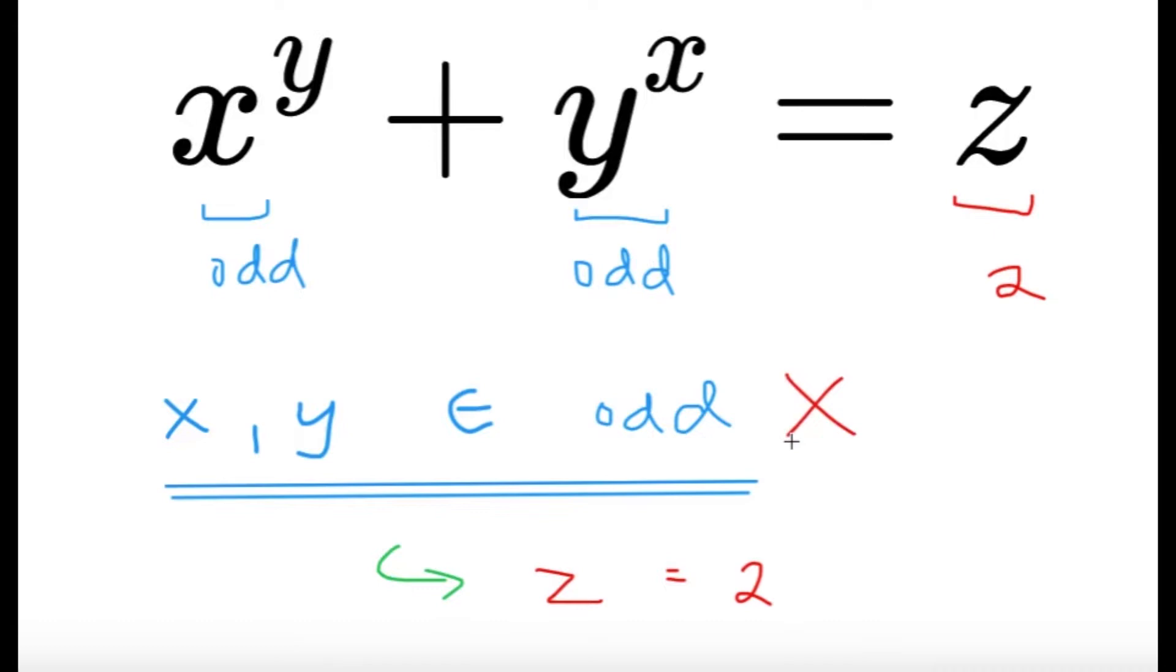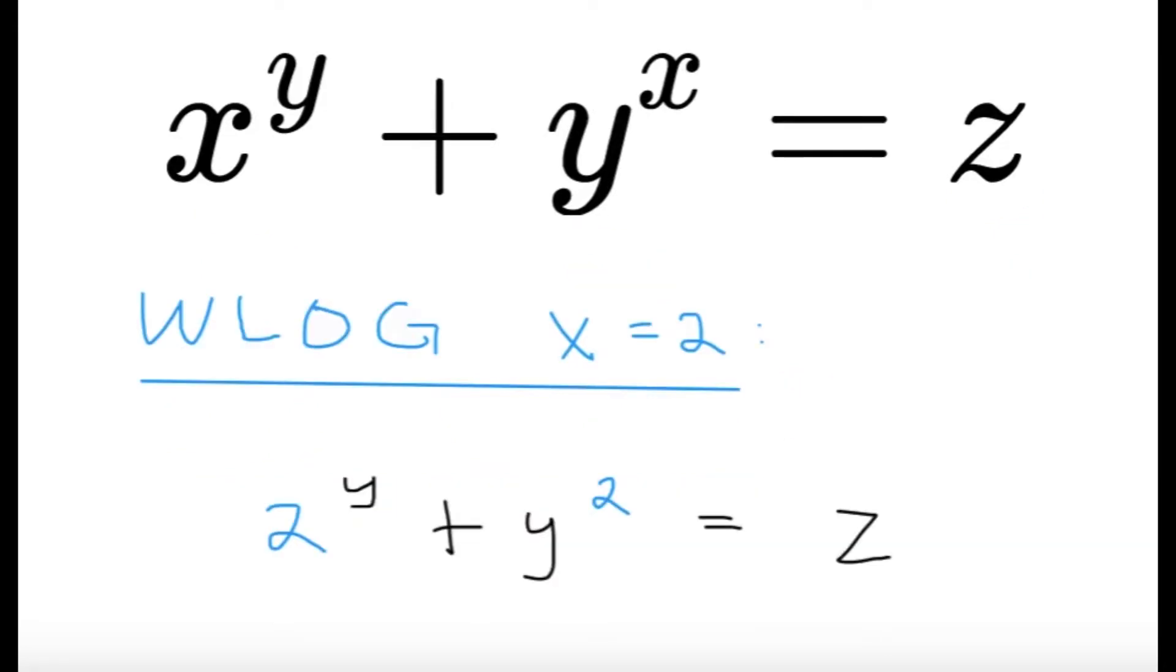Okay, so since x and y cannot both be odd, at least one of them must be even. So without loss of generality, let's just make x equal to 2. Now, the WLOG here means without loss of generality. So it doesn't really matter if x is the 2 or y is the 2 since even if I switch x and y, it's not going to matter. So again, without loss of generality, let x be equal to 2. x is even, but there is only one even prime number. So x equals 2 indeed.